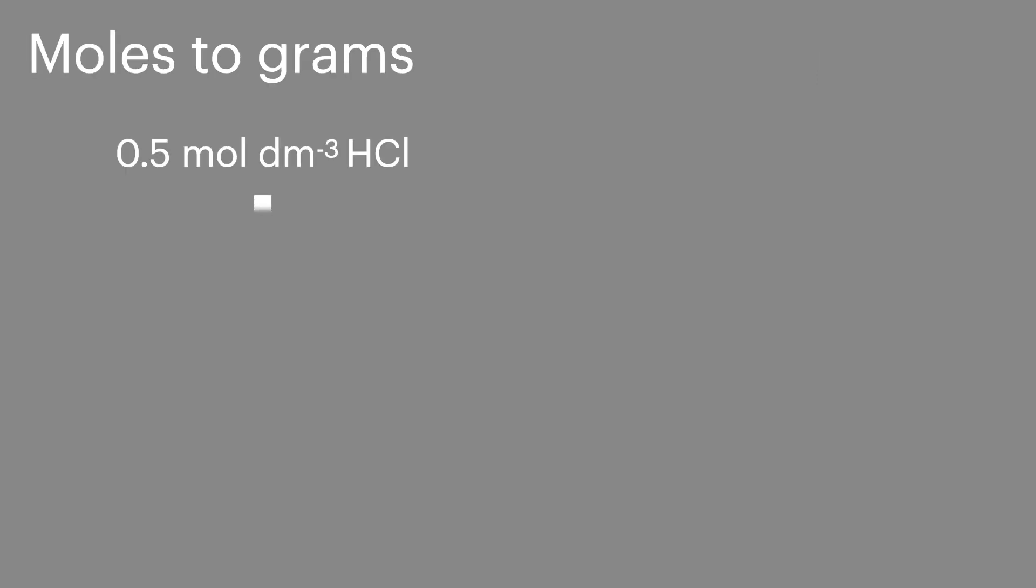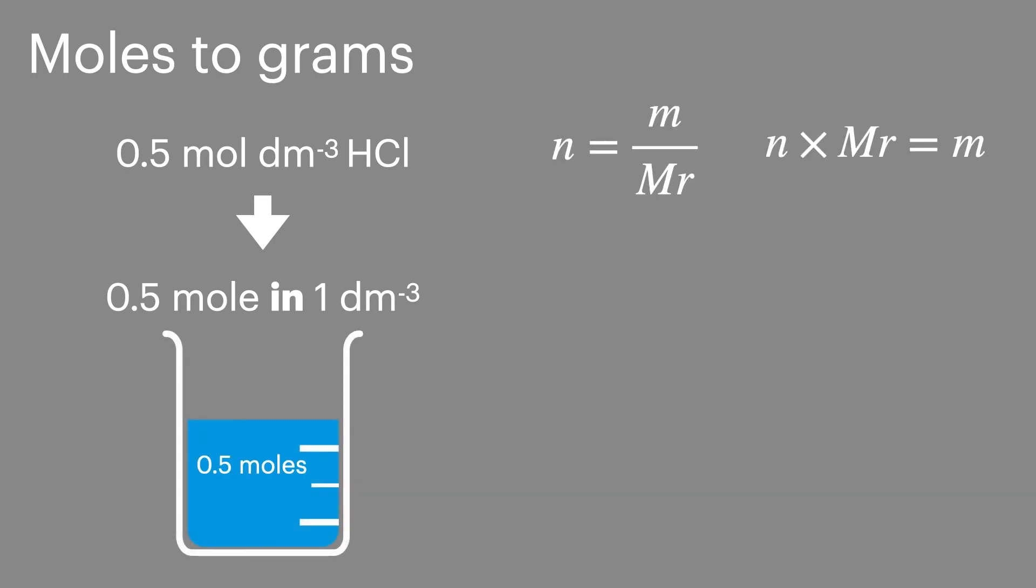Sometimes concentrations can be given in grams per decimetre cubed, and if we want to convert between moles and grams, we can use a number of moles equals mass over Mr, rearrange to give mass. We can add in our numbers and finding the Mr of our substance being dissolved to give the amount in grams. This is a quick and easy way to switch between moles per decimetre cubed and grams per decimetre cubed.